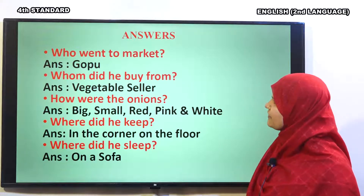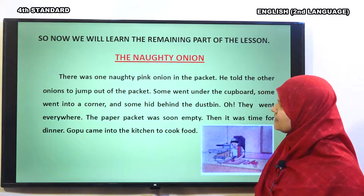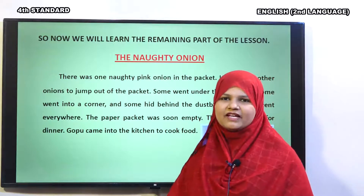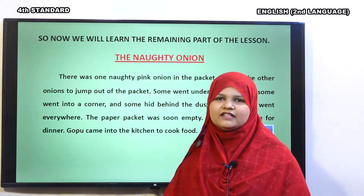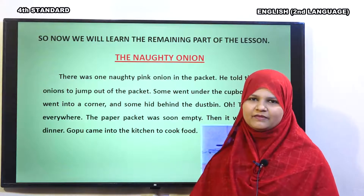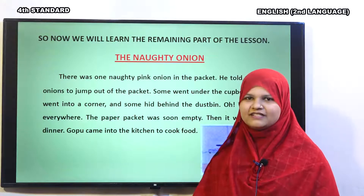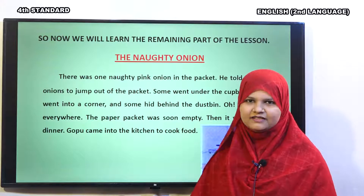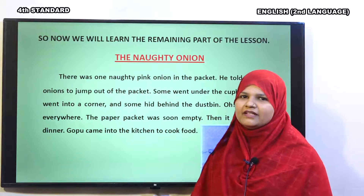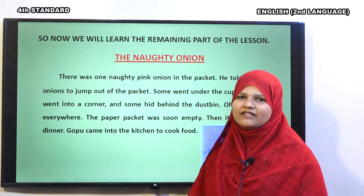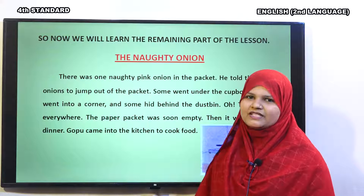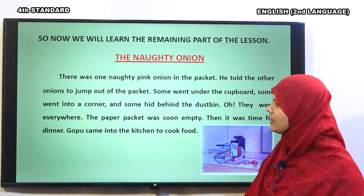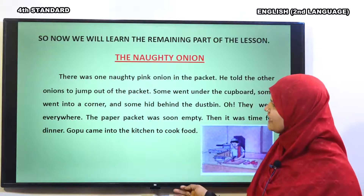Let us move to the lesson. So, in the last class, we learnt that Gopu went to the market and bought onions. Then, he kept the onions in the corner on the floor. Then, he was feeling very tired, so he slept on the sofa in the living room. Now, let us move to the next part.